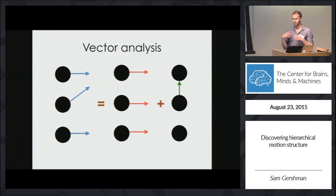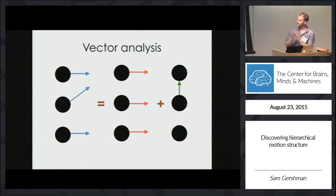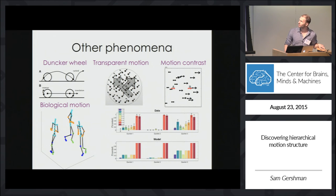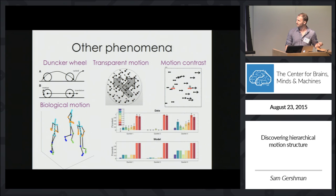What Bayesian vector analysis basically does is decompose this visual stimulus into the sum of a horizontally translating reference frame and a vertical motion component. We've applied this to many other phenomena — Dunker wheel, transparent motion, motion contrast, biological motion — and we've also collected some new psychophysical data. The model provides an exquisitely good fit to this data.